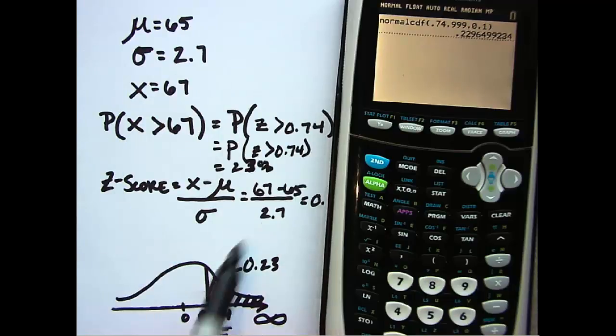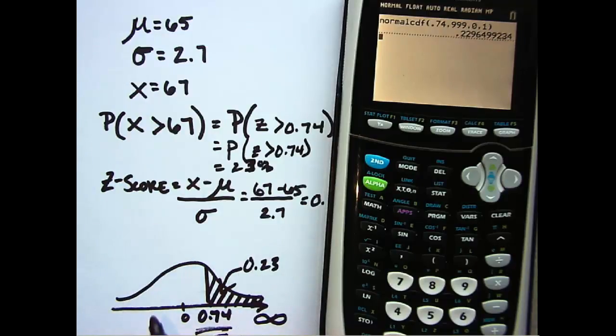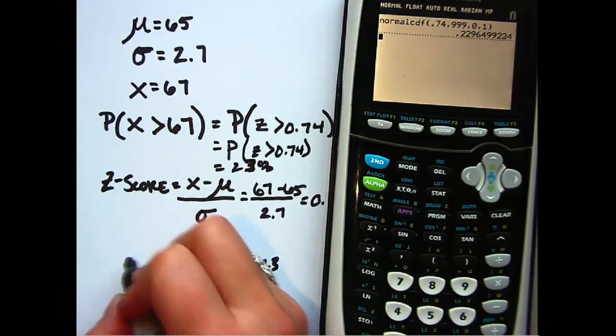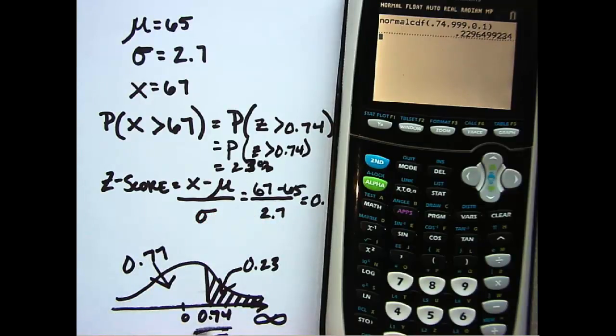the probability for being below—that was the last video. Here's the probability for being above. And what you may recall from the last video is that this area was equal to 0.77. So if I wanted to, because I was at the same location, I was just at the opposite direction, I could have taken